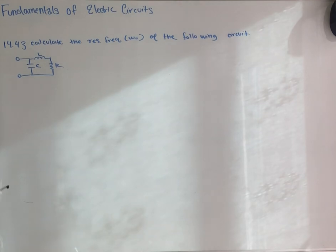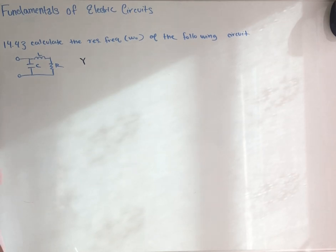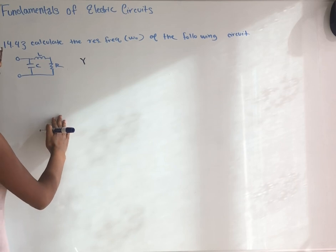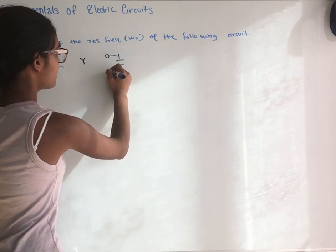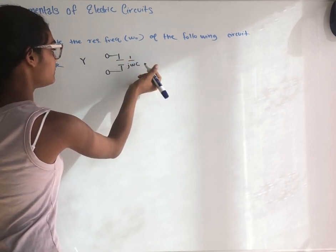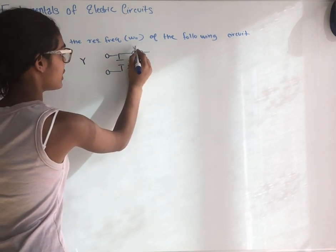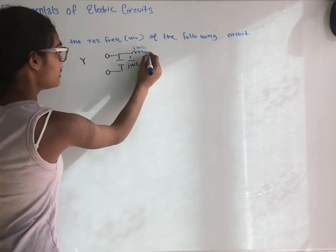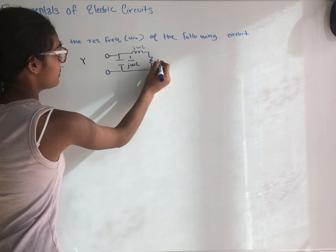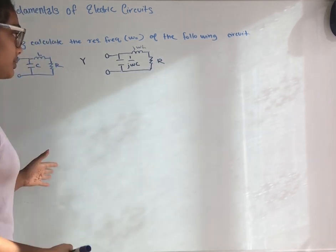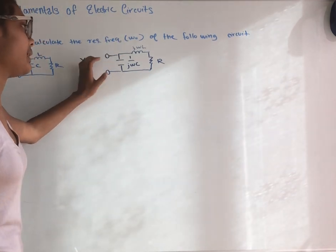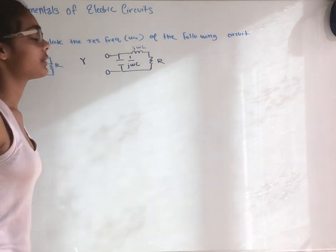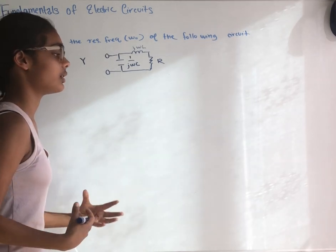We can start writing down equations. I normally like using admittance because it reduces a lot of algebra, but you can use impedance if you want. We write the circuit in the Z-domain: for a capacitor this becomes 1 over j omega C, the inductor becomes j omega L, and the resistor remains R. The inductor and resistor are in series, but not in series with the capacitor because of the two terminals, so they are in parallel with the capacitor.